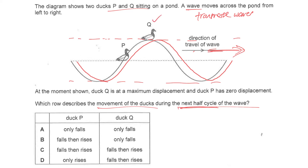This first step is important. Q is very obvious — duck Q is at the highest point, so the next moment it will be going down. For P, you need to determine whether it's going up or down. You can see that the duck will be on the water, so the next moment P is going down. So both Q and P are going down.